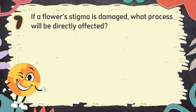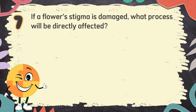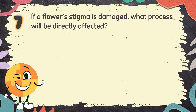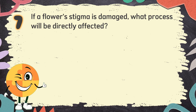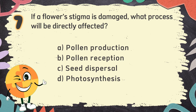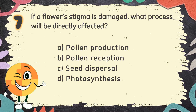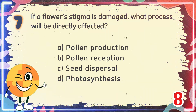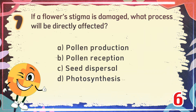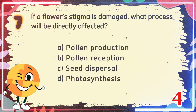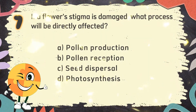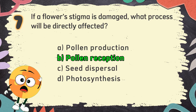Number 7: If a flower's stigma is damaged, what process will be directly affected? The choices are: A. Pollen production, B. Pollen reception, C. Seed dispersal, D. Photosynthesis. The correct answer is B. Pollen reception.